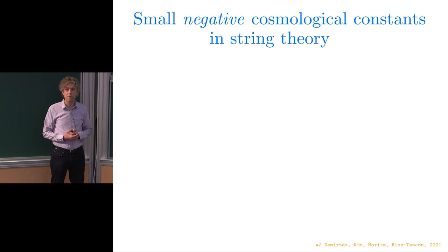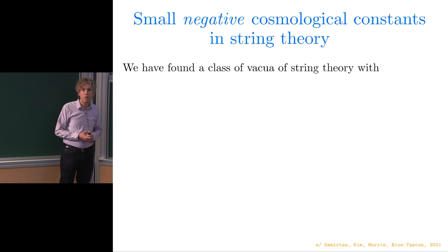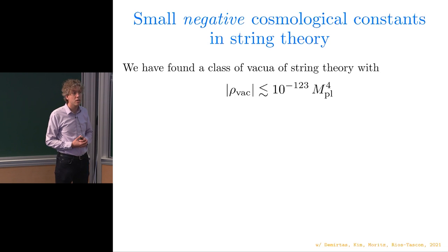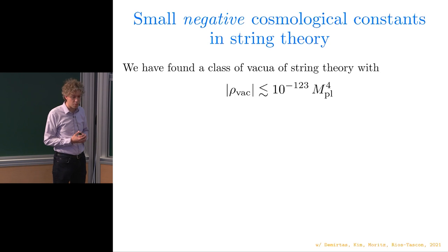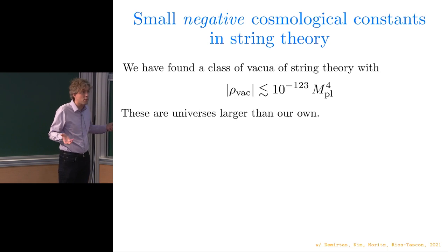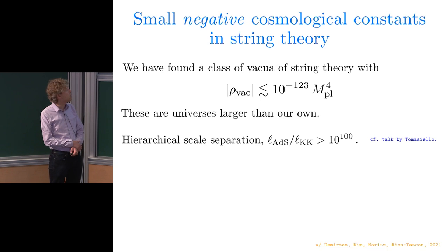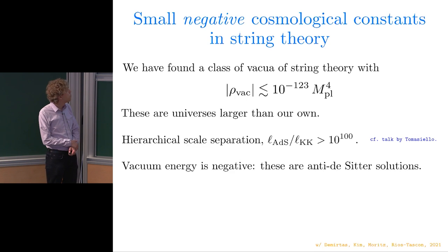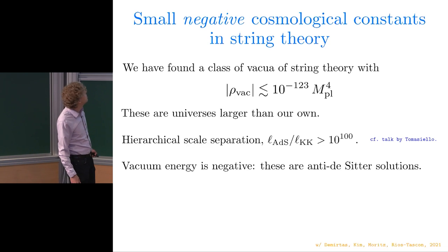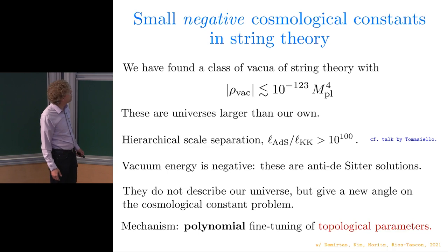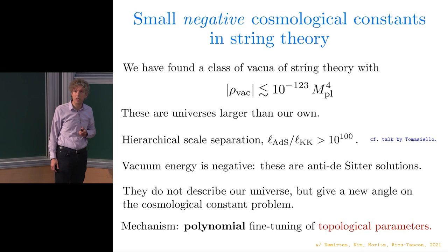The holy grail in this subject is de Sitter solutions of string theory with small cosmological constant. That's not something that has been achieved, but there's been progress. The progress is that we've found small negative cosmological constants in string theory. We've found a class of vacua where the vacuum energy is less than, could even be much less than, the observed value of 10 to the minus 123 in Planck units. Yet the internal space is modest in size. These are universes in which the radius of curvature is larger than the radius of curvature of the de Sitter universe we inhabit, and they have hierarchical scale separation. We have examples where the AdS length over the Kaluza-Klein length is bigger than 10 to the 100.